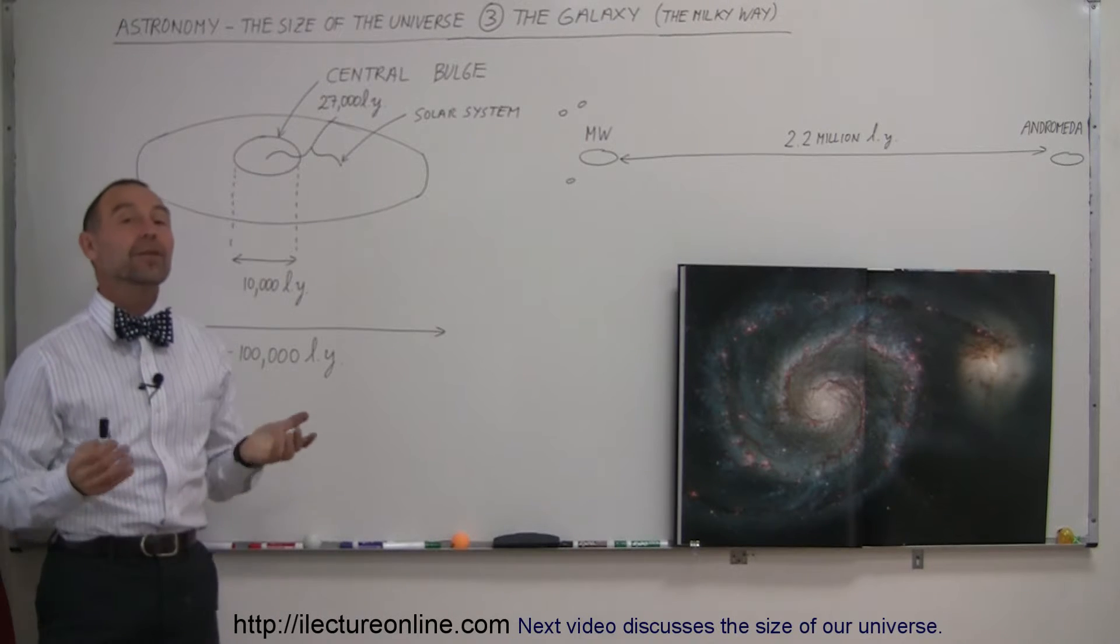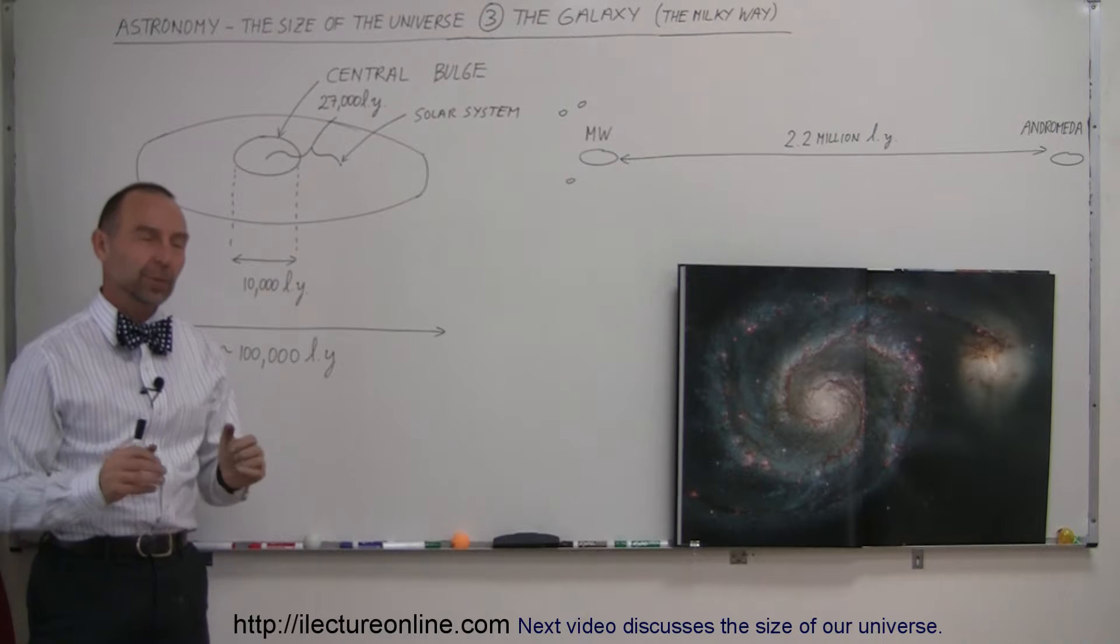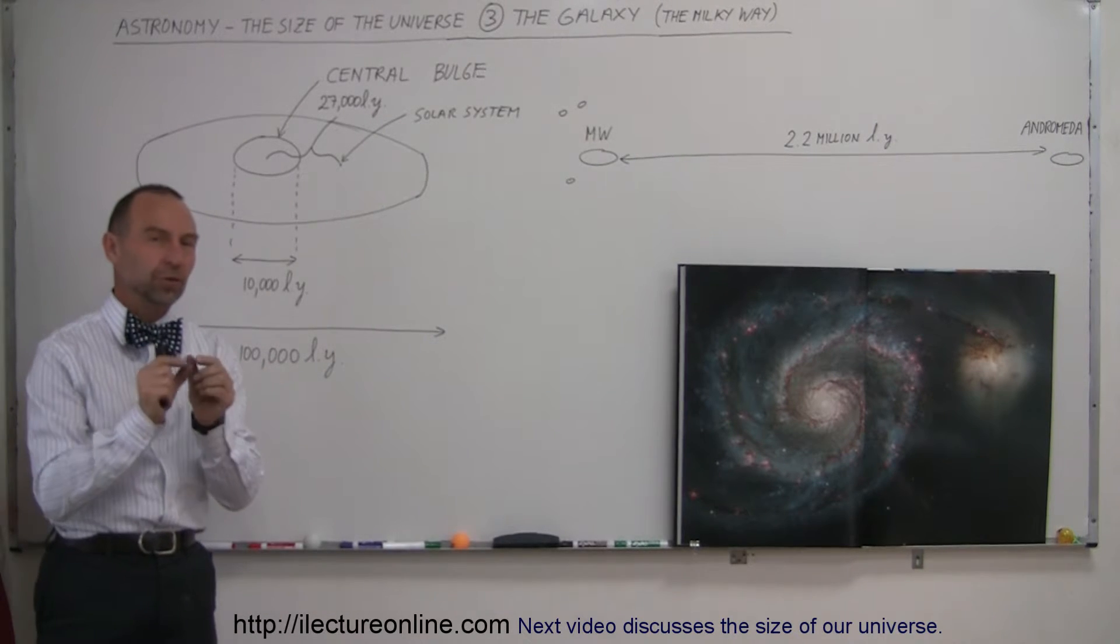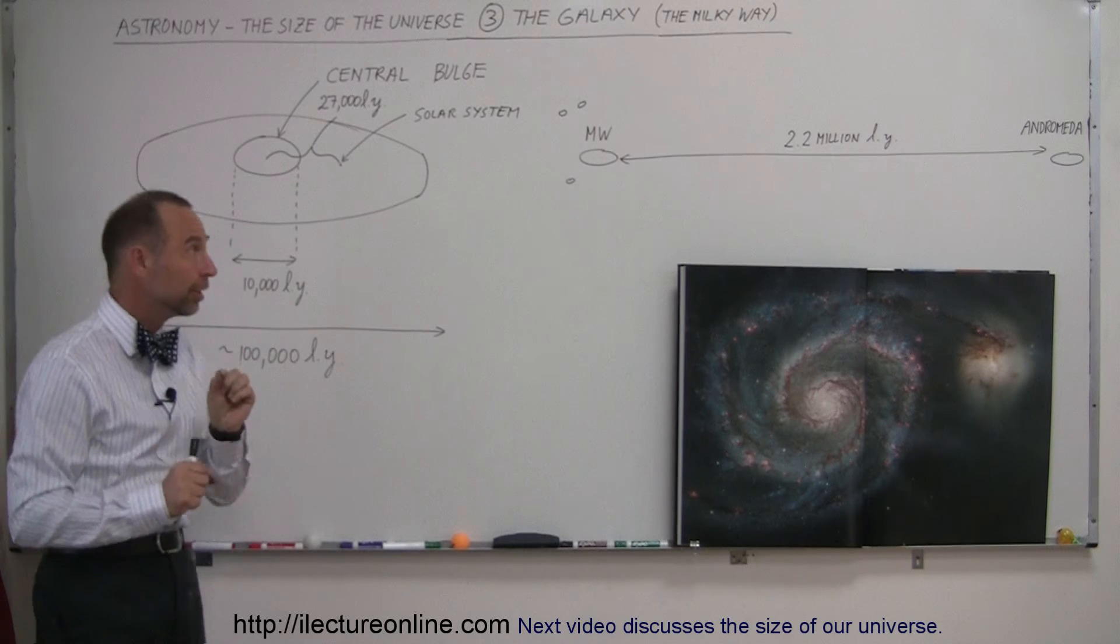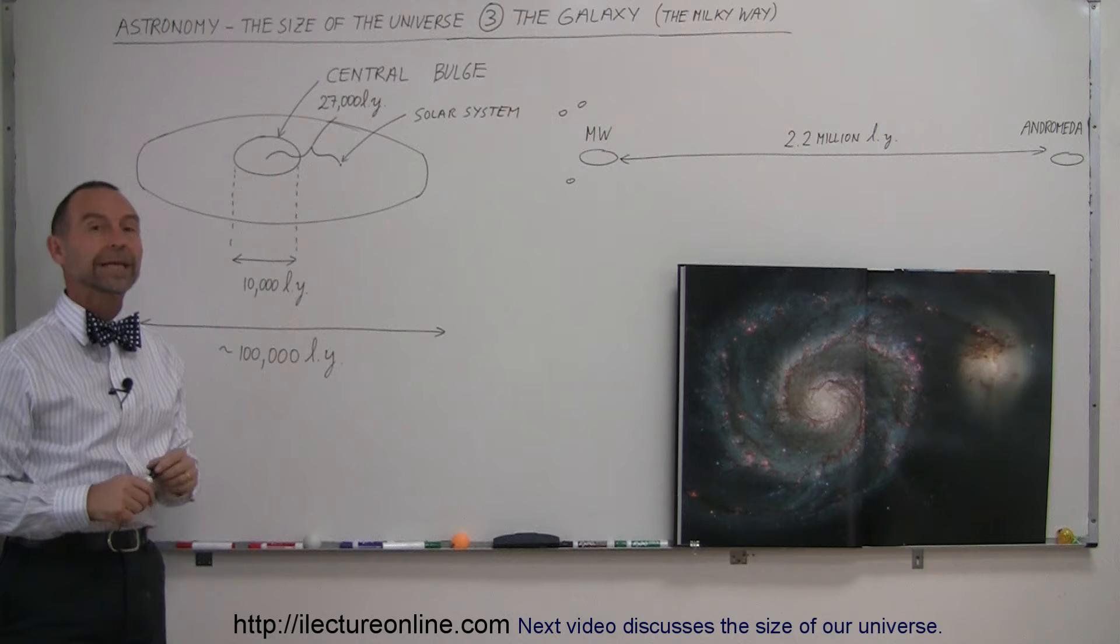Now we're going to talk about our galaxy, the Milky Way. Again, remember, we're trying to get a feel for how big our universe is. We talked about the moon and the Earth. We talked about our solar system. But now we realize our solar system is just one small part of a very big conglomerate of stars called a galaxy.